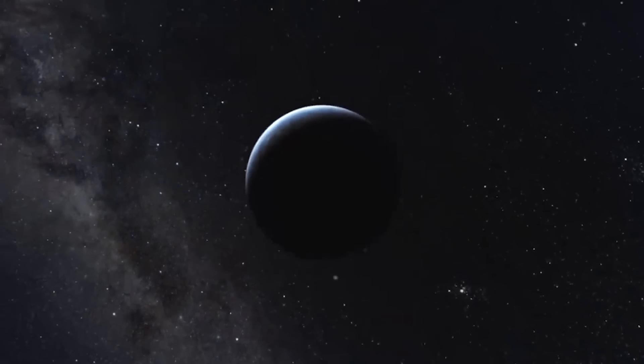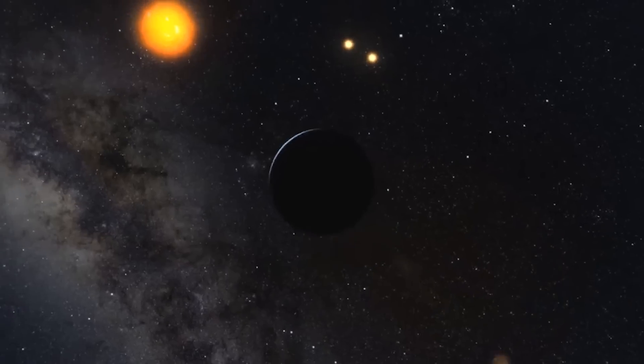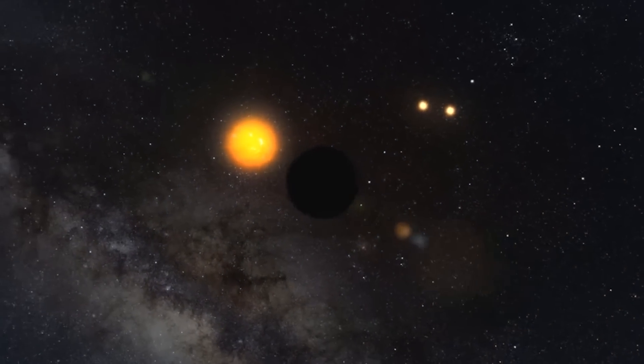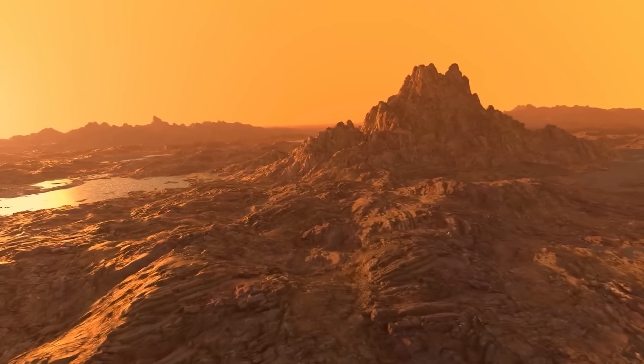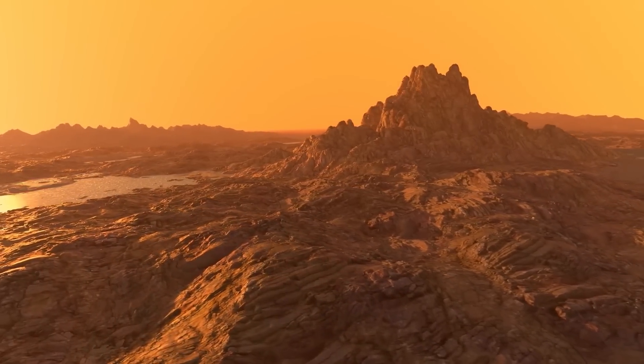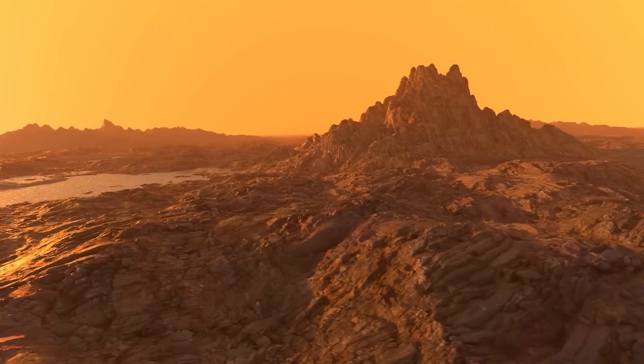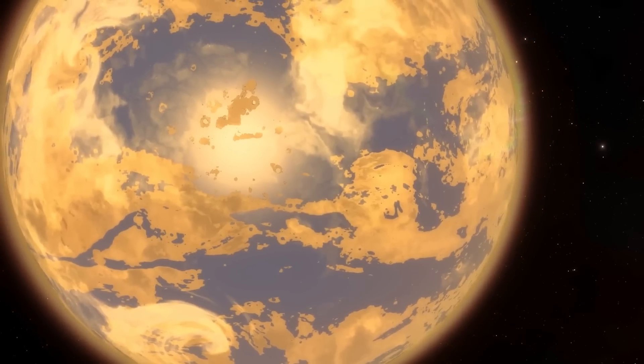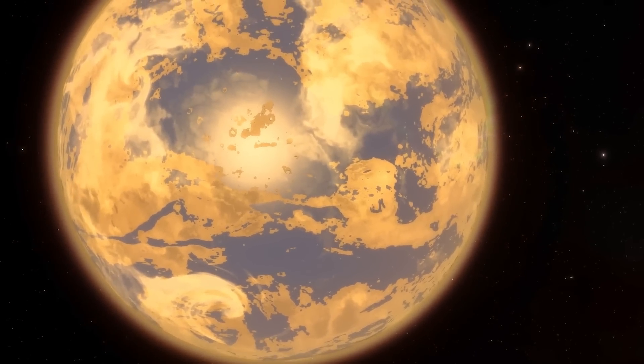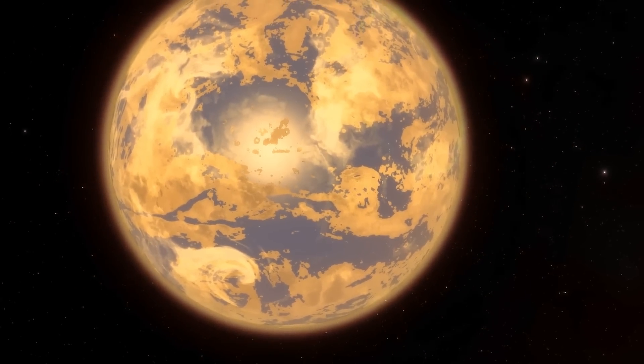On closer examination, Proxima b turns out to be very similar to Earth, with a radius 1.1 times that of Earth and a mass 1.3 times that of Earth, indicating that it is a rocky world with an equivalent density. However, there are significant differences. The first is the location of the two planets in their respective solar systems.